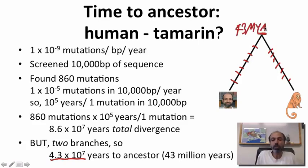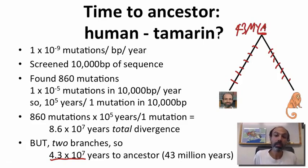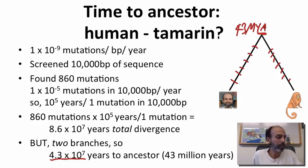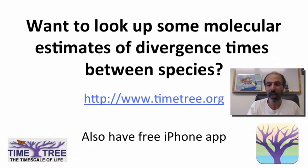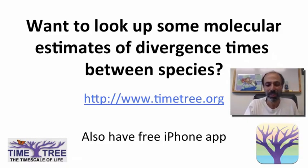43 million years ago is when we may have shared a common ancestor with tamarins. Several people have told me they're very interested in divergence time estimates and calculating them from molecular data. If you're interested in published divergence time estimates, I refer you to timetree.org. They also have a free iPhone app where you can type in your favorite two species and see the estimated divergence time between them.